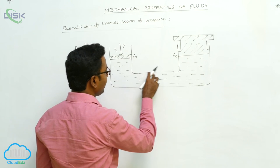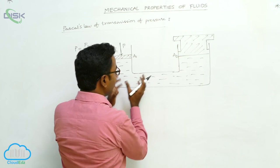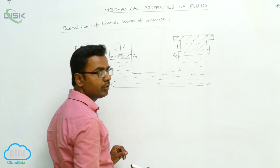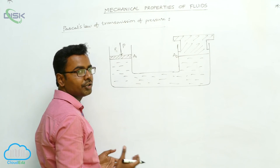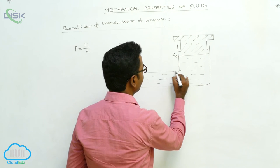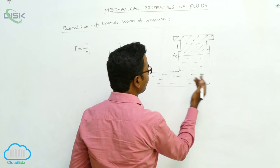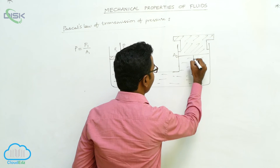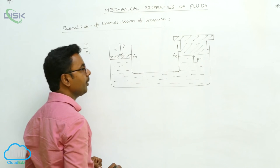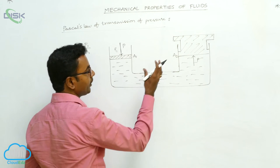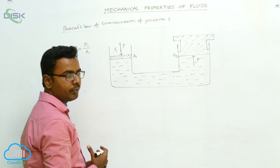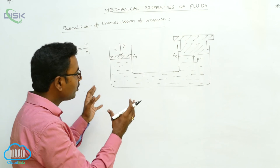This pressure P is transmitted from here to everywhere — in all directions, undiminished and equally. So the same pressure P will also act on the piston of the larger area.